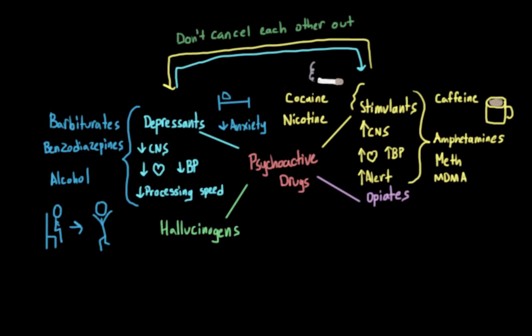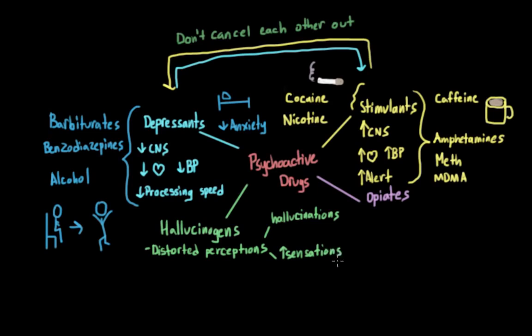The next class of drugs are hallucinogens, sometimes referred to as psychedelics. These drugs cause individuals to experience distorted perceptions, including hallucinations — seeing or hearing things differently from how they actually are — and heightened sensations that feel real but differ from what is actually going on. These drugs aren't stimulants or depressants, even though they can give people a lot of energy or sometimes calm them down. They are classified by the perceptual changes they bring about, including emotional responses, feelings of connectedness, and intense, rapidly changing mood swings.